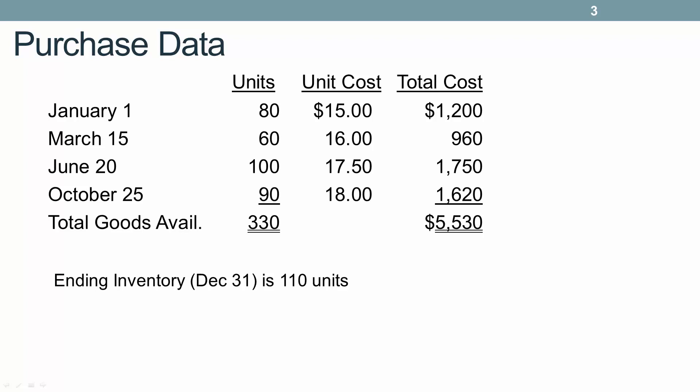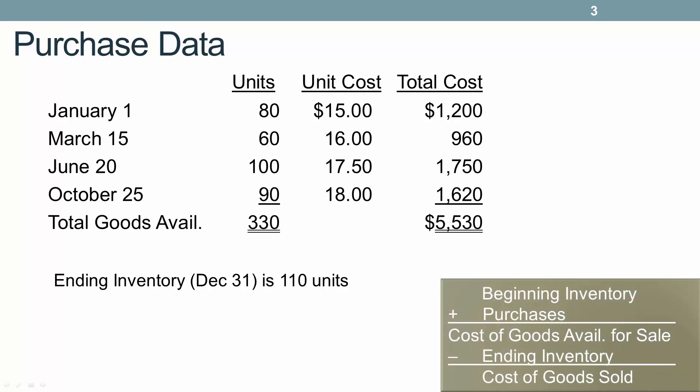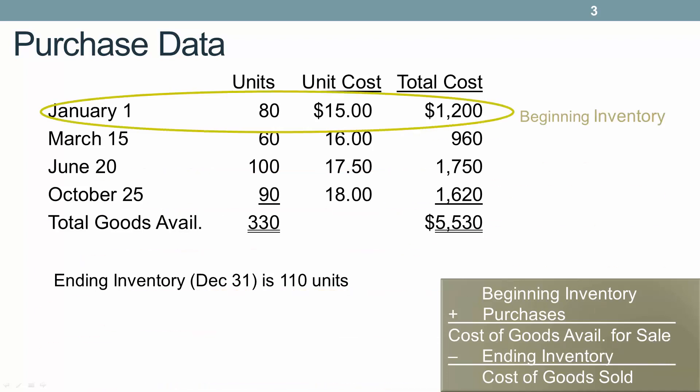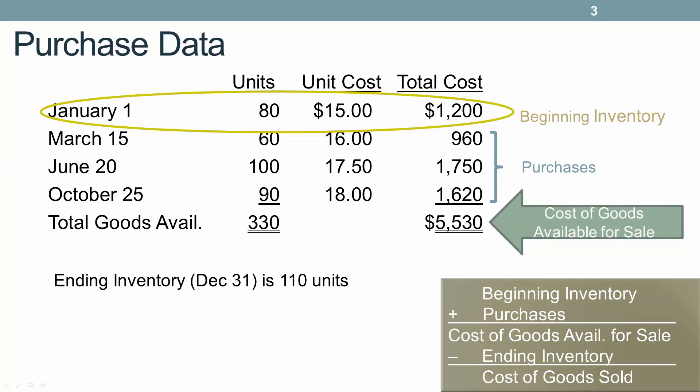Here we have some basic purchase data for our company, showing inventory purchases made during the year. Our formula for calculating cost of goods sold is: beginning inventory plus purchases equals cost of goods available for sale, minus ending inventory equals cost of goods sold. Our beginning inventory is our January 1 amounts, and then during the year we made three purchases, giving us a total cost of goods available for sale of $5,530 and 330 total units available for sale.